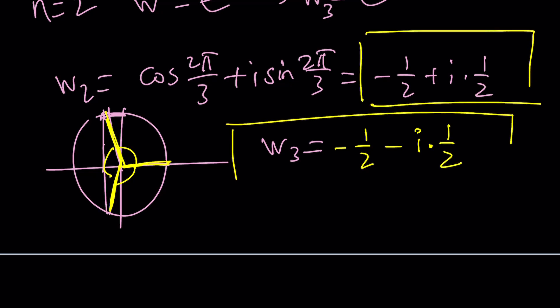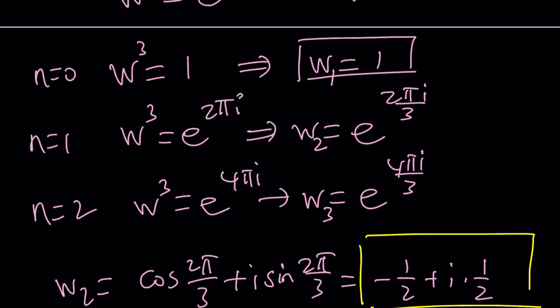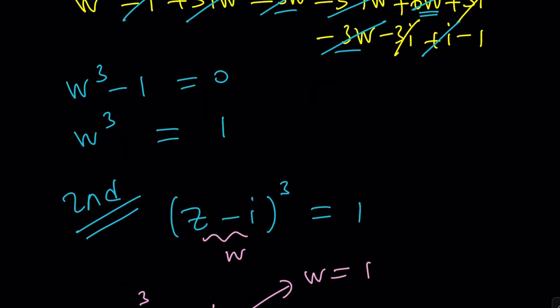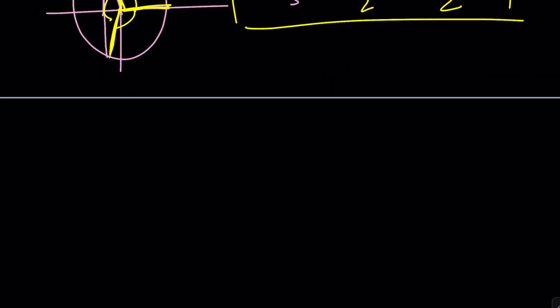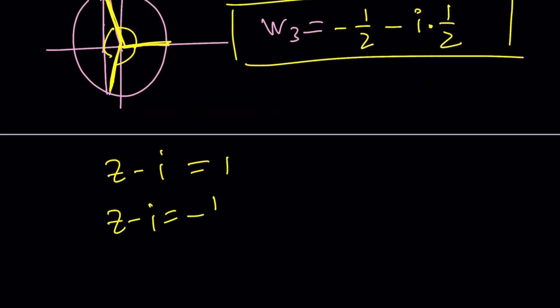So those are going to be the cube roots. And obviously, those are going to be the solutions for W. But W is what? W is Z minus i. So Z minus i can be 1. Z minus i can be negative 1 half plus root 3 over 2 i. And Z minus i, because these are the W values, can be negative 1 half minus root 3 over 2 i.